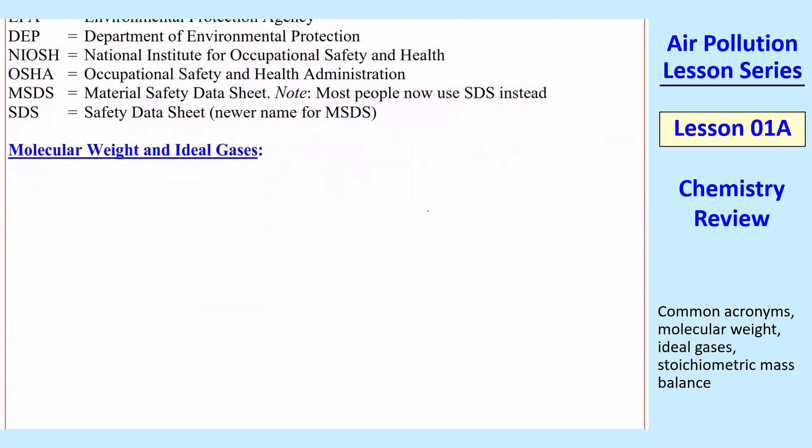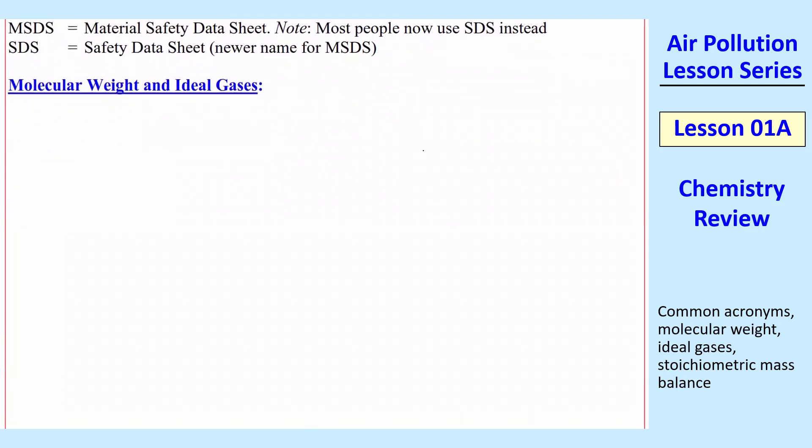So I want to start by review of chemistry. This should all be review, but my notation may be different than you're used to, and I'm very much a stickler for units. So capital M is molecular weight, and when I use squiggly brackets around something, it means the dimensions of.